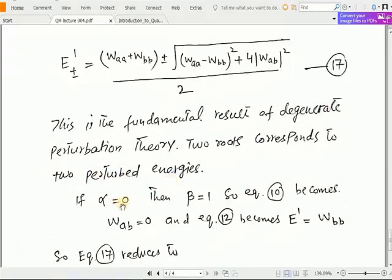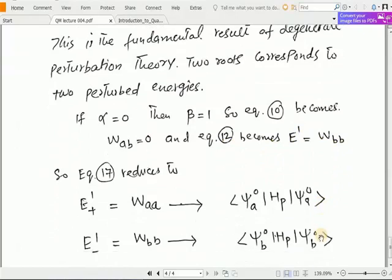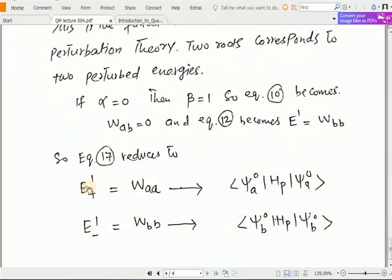If we consider α = 0 and β = 1, then equation number 10 becomes W_ab = 0 and equation number 12 is now of the form E^1 = W_bb. Hence the equation number 17 can be reduced as: for E^+, it is written as W_aa, and for the minus part, it is written as W_bb.